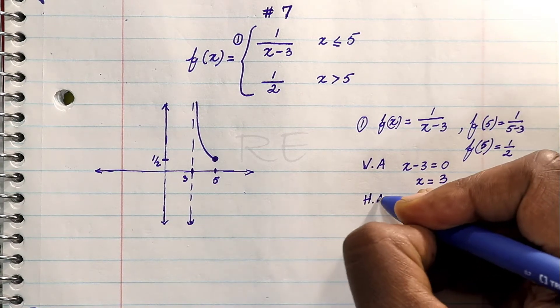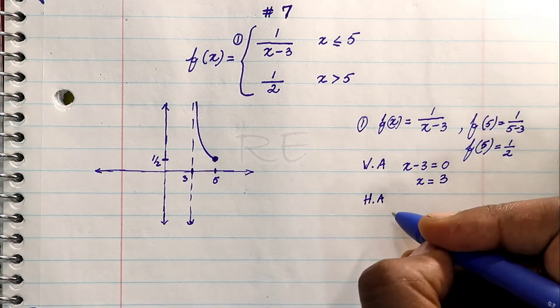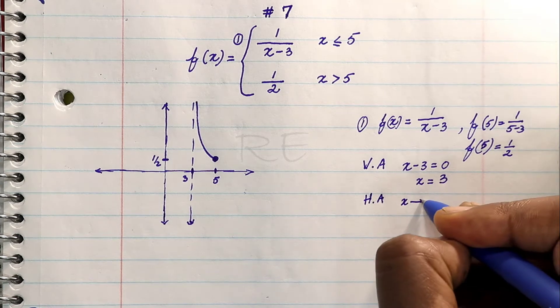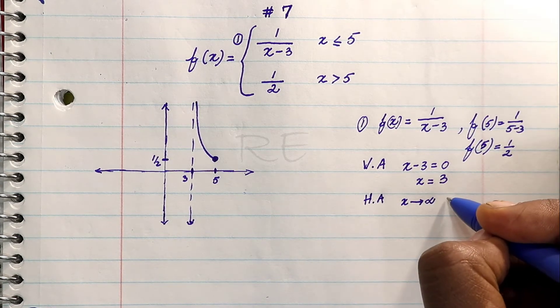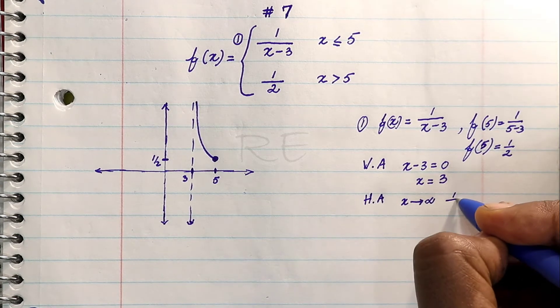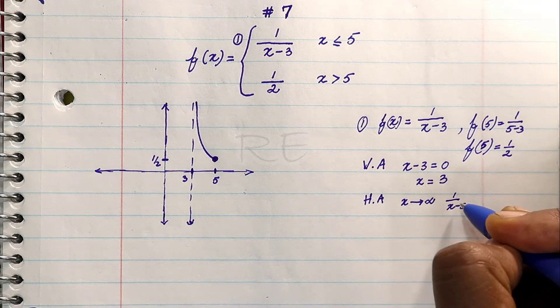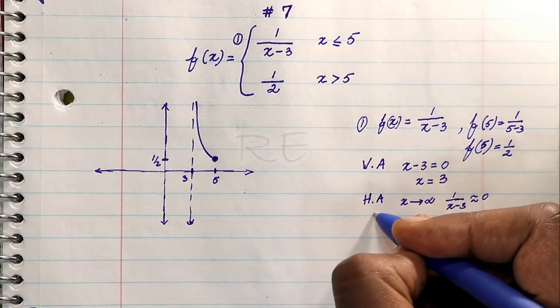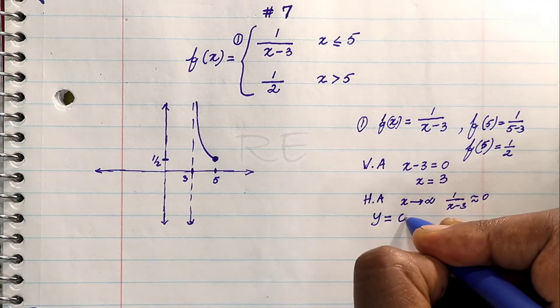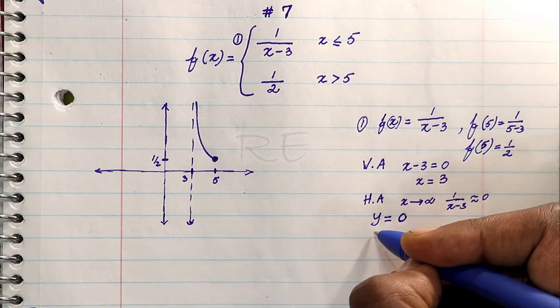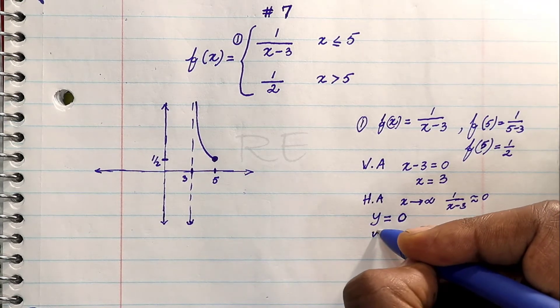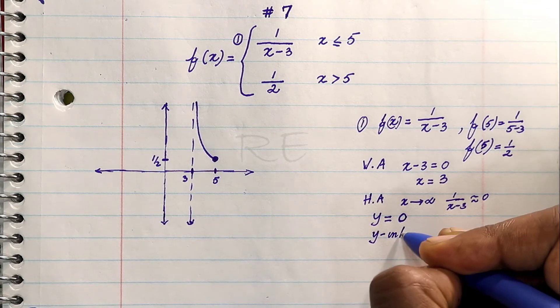Now let's look for the horizontal asymptote. As x gets extremely big, as x approaches infinity, 1 over x minus 3 will be approaching 0. So y equals 0 is the horizontal asymptote, the x-axis.